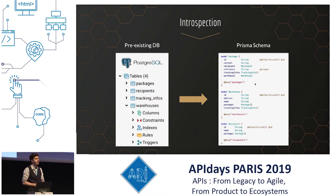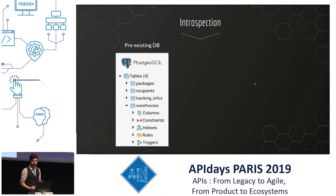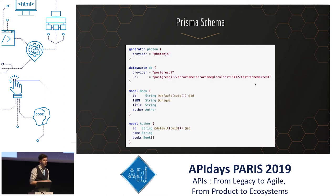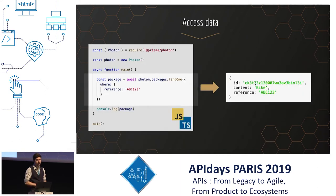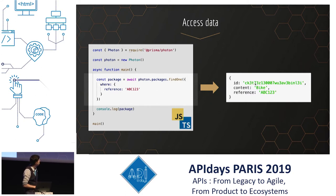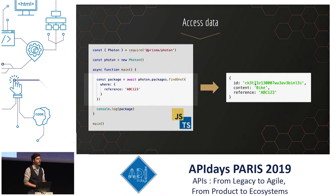Now we have the schema. What's left to do is to really access the data, and to do that we will use Photon. The generator part of the schema will ask Prisma to generate the database client every time the schema changes. Here's how you use it: after instantiating it, you can do photon.packages.findOne where reference is abc123, and there we go — we have the package. Because Photon is generated, we can access all the great features of type safety using TypeScript and also auto-completion, since we don't have to rewrite all the types — they are already generated in Photon.